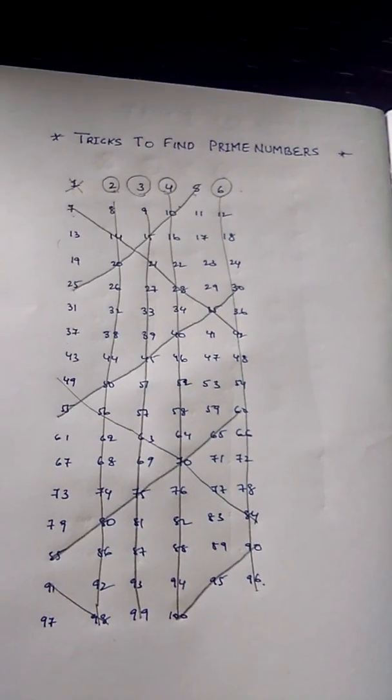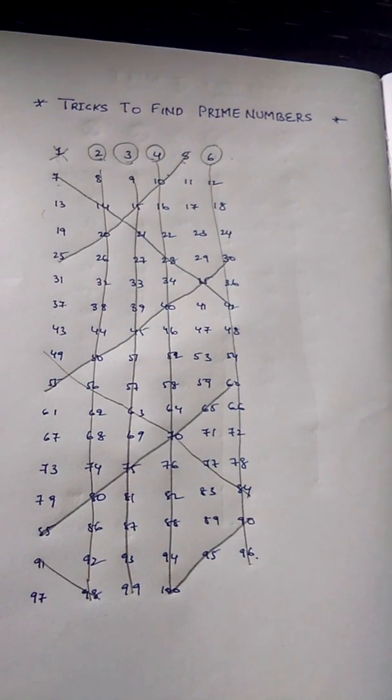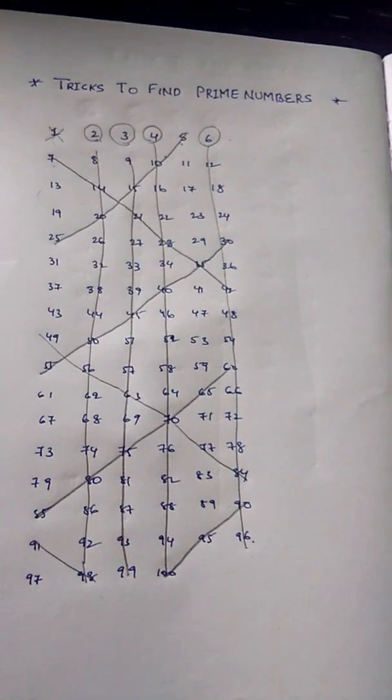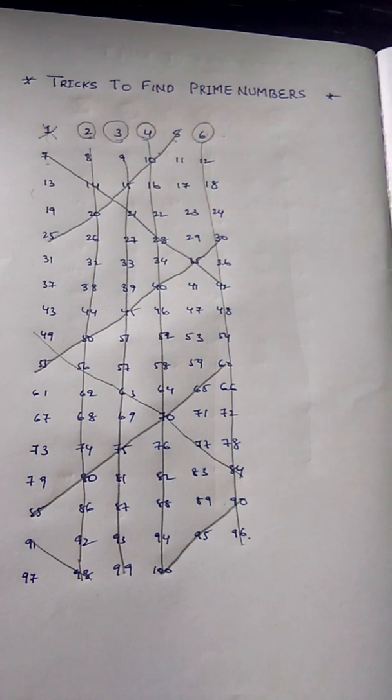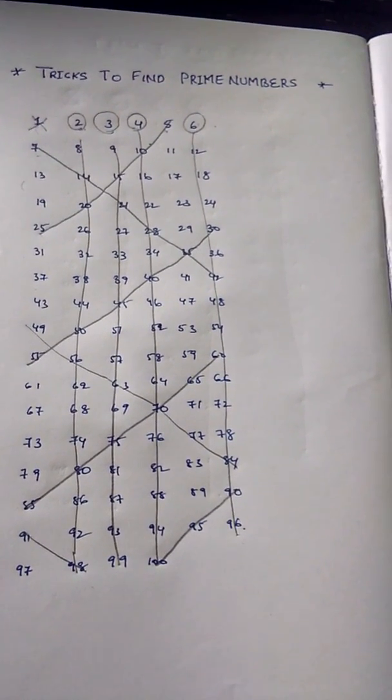This is how we arrive at prime numbers. All numbers which are encircled and all numbers which are remaining are the prime numbers. These are 25 prime numbers between 1 and 100. Isn't it simple?